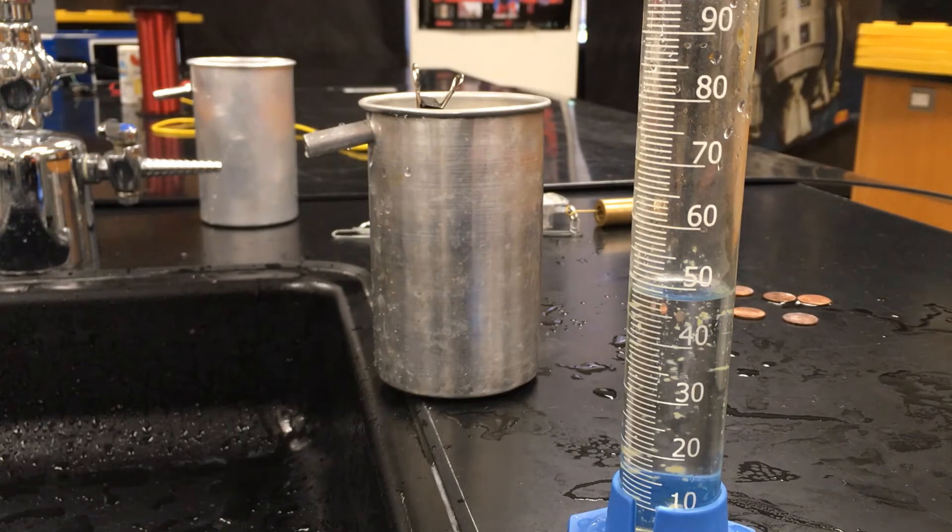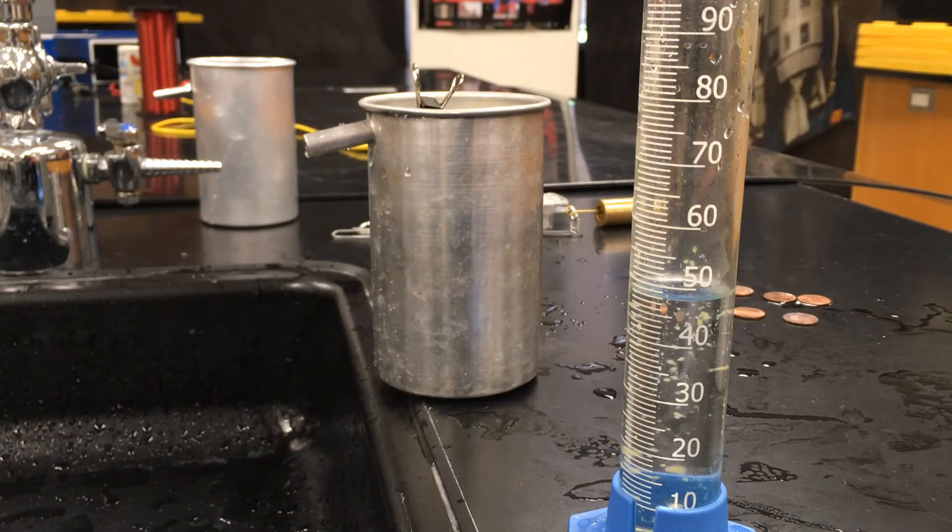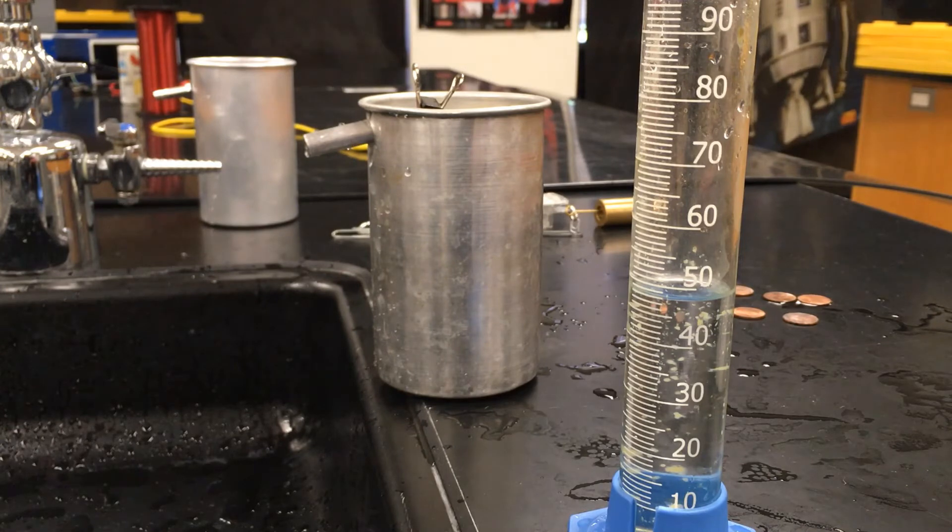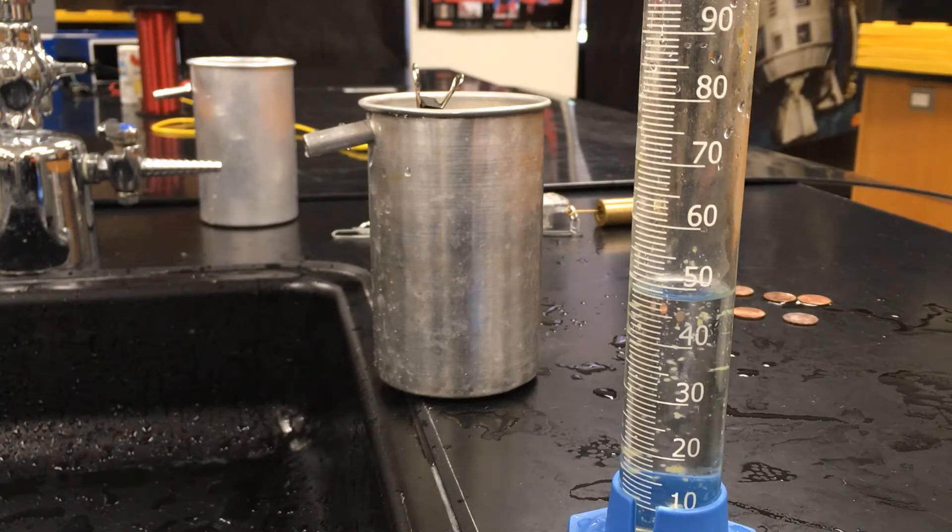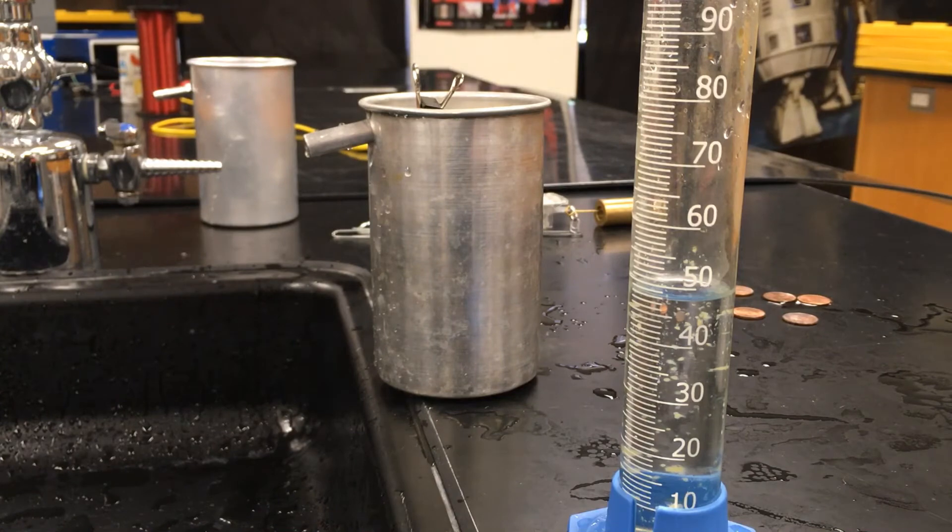Remember, remembering that one milliliter of water displaced weighs, I'm sorry, has a mass of one gram. So we had a 50 gram object that in order to float needed to displace 50 grams of water or 50 milliliters of water, which is exactly Archimedes principle. In order for an object to float, it must displace its own mass of the fluid.